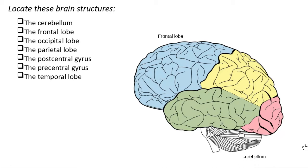Right on top of the cerebellum, let's go to the pink one back here. We're back into the cerebrum, back into the brain itself. The lobe of the brain labeled in pink back here is the occipital lobe.